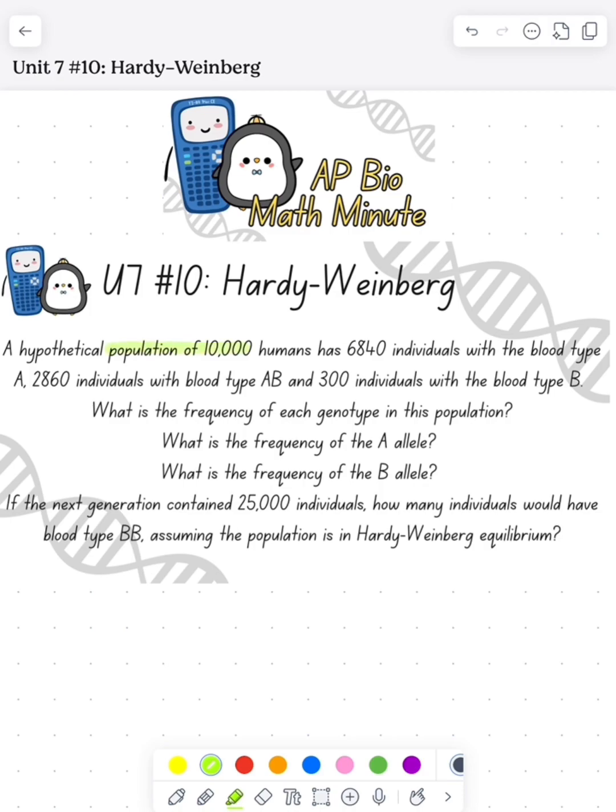So we have a hypothetical population with 10,000 individuals, and then they've told us the blood types for these individuals. So A blood type is going to be AA, AB blood type is AB, and then B blood type is BB.